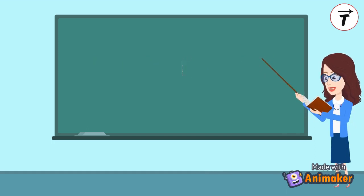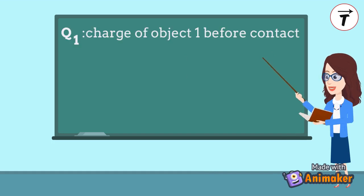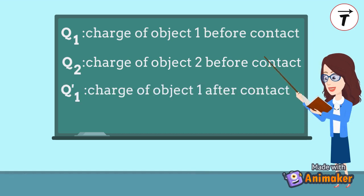Where q1 is the charge of object 1 before contact, q2 is the charge of object 2 before contact, q1 prime is the charge of object 1 after contact, and q2 prime is the charge of object 2 after contact.